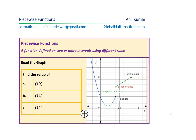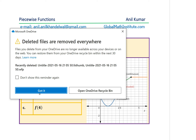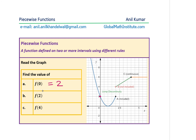Now let's find the value of the function at different x values. What is f(0)? f(0) is the value of the function when x = 0. From the graph, f(0) = 2. Now let's find f(2). f(2) is the value of the function at x = 2. At x = 2, that value is also equal to 2.